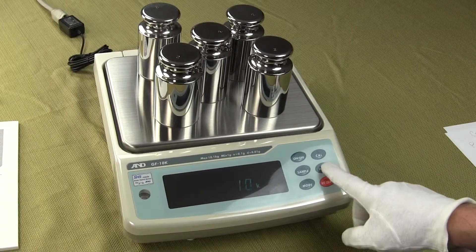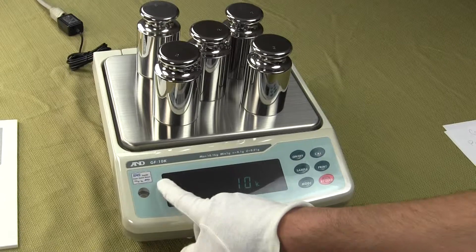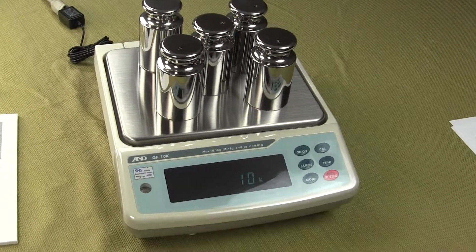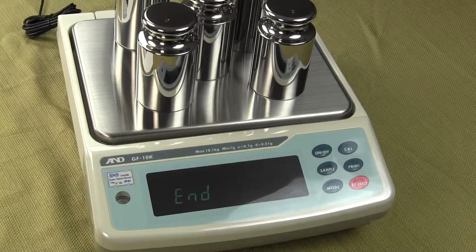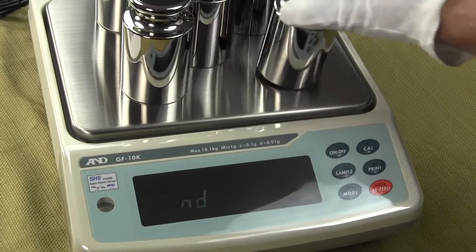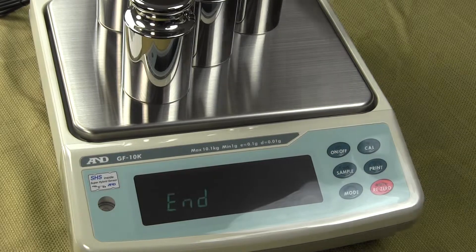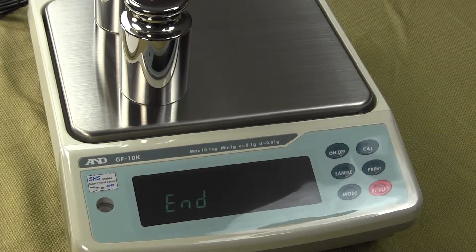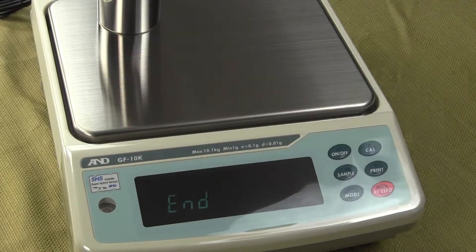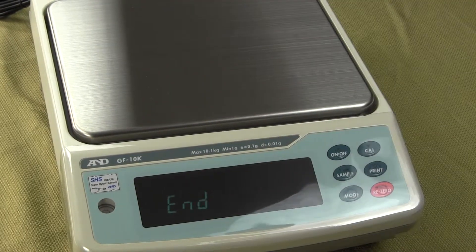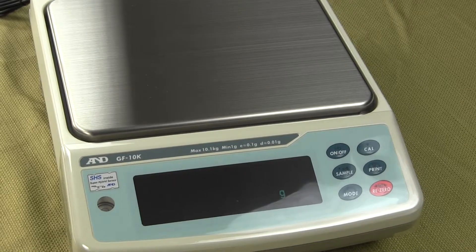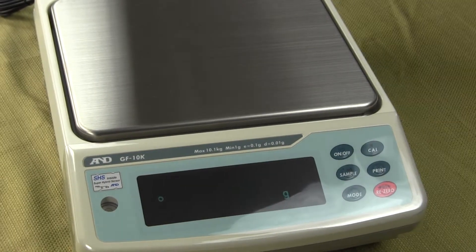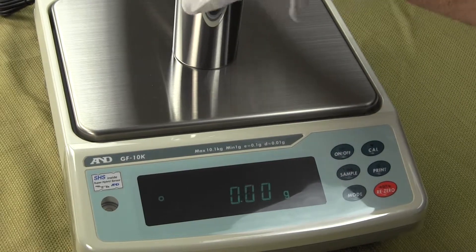Now to store the value, we're going to again press the print key. When we press that print key, in the upper left-hand corner again, we're going to see that arrow. There's the arrow. It's storing the value with 10 kilograms. Now it says N. We remove the weights. And the balance will go back to zero. And that's how simple it is to calibrate the A&D balance.